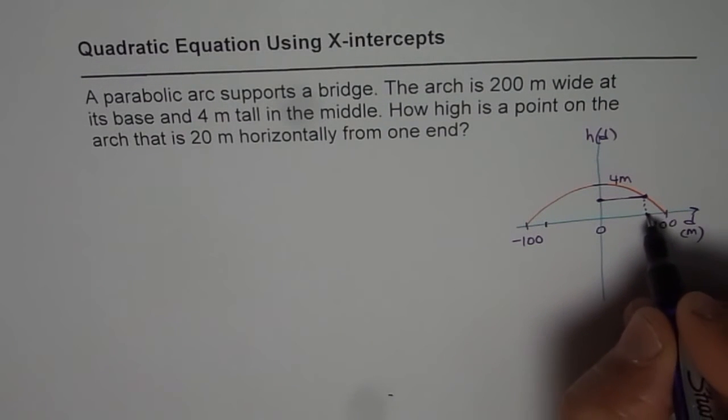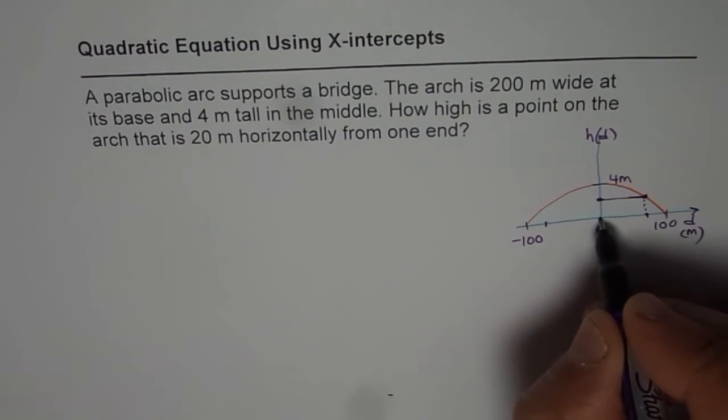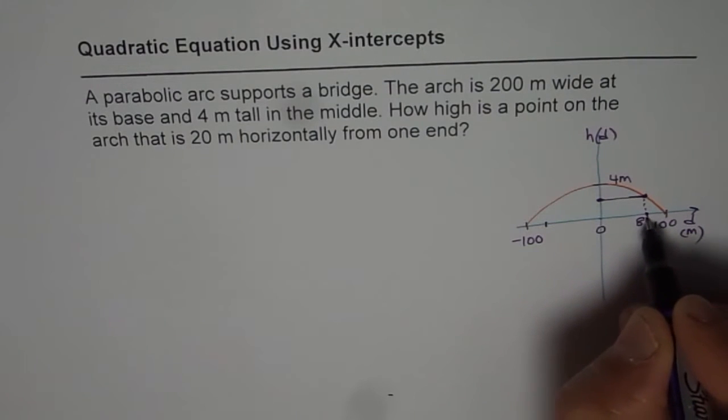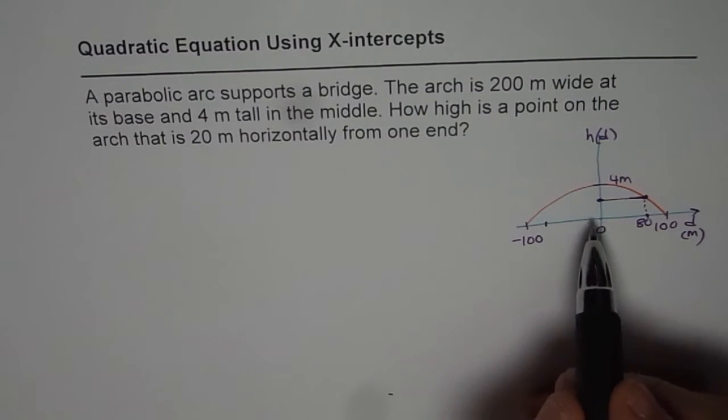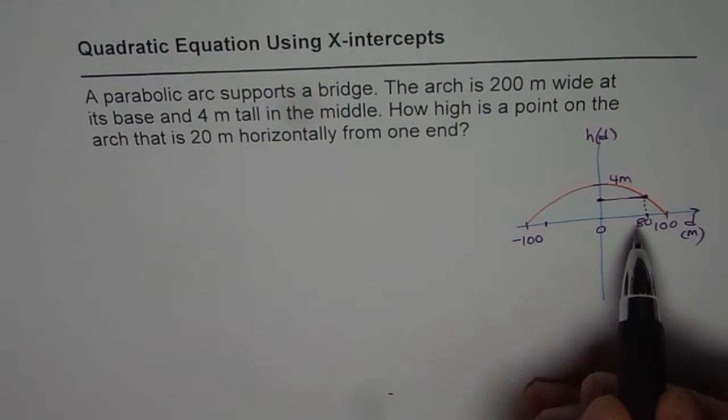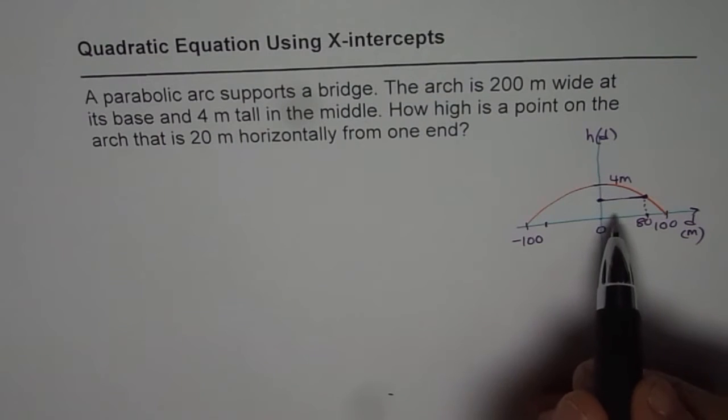So if it is 20 meters from one end, then from zero it is going to be 80 meters away. So that is kind of our understanding before we even start answering the question. Now, let us try to answer the question.